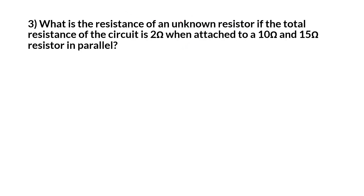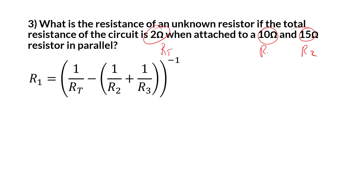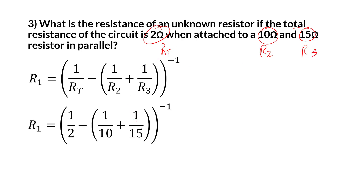Next: what's the resistance of an unknown resistor if the total resistance of the circuit is 2 ohms and it's attached to two other resistors? The total is given, and we call the others R2 and R3 — it doesn't really matter what we call them. Plugging in the values, we get 3 ohms for the unknown. And as a check, the total should be less than 3, 10, or 15 ohms, which it is.